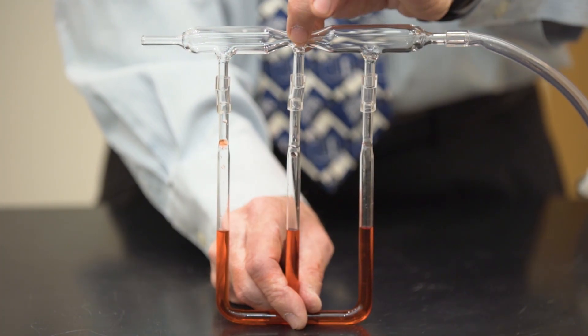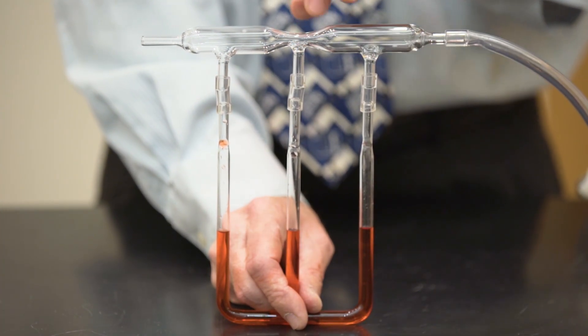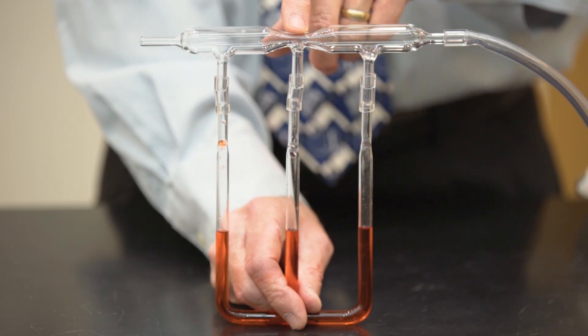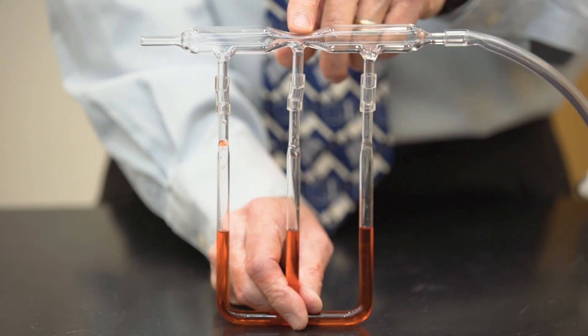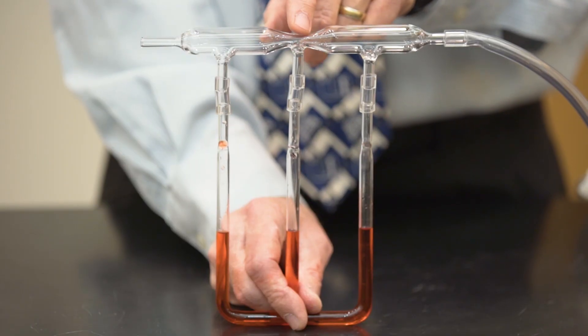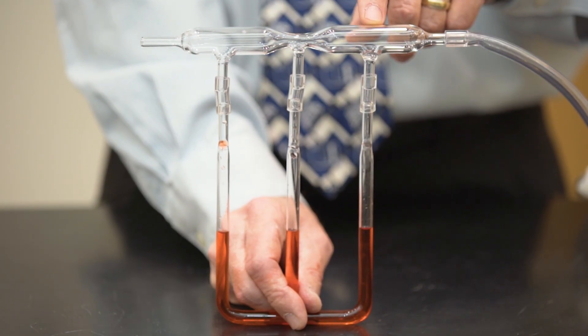And because this spot has a smaller cross-sectional area, the air has to flow faster here. So we've got a high velocity region here, a low velocity region here.